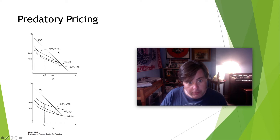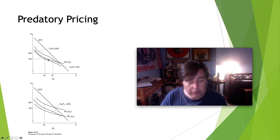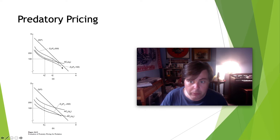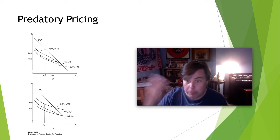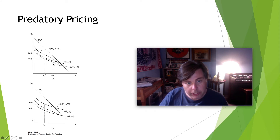When the big airline lowers its price to $100, the residual demand curve for the little airline shifts lower. Why? Because when the big airline lowers its prices, more people buy tickets on the big airline and there's less demand left over for the little airline. At $100 for the big airline, the residual demand is insufficient for the little airline to operate anymore.